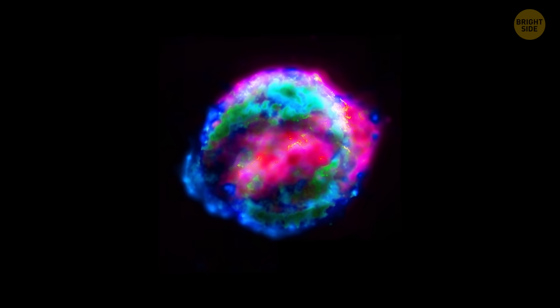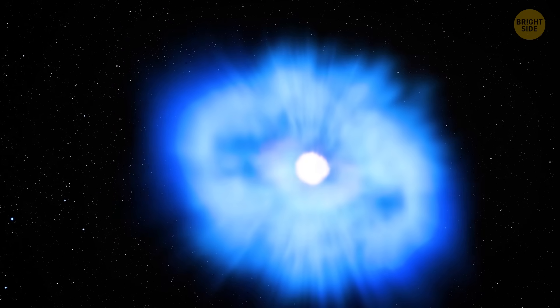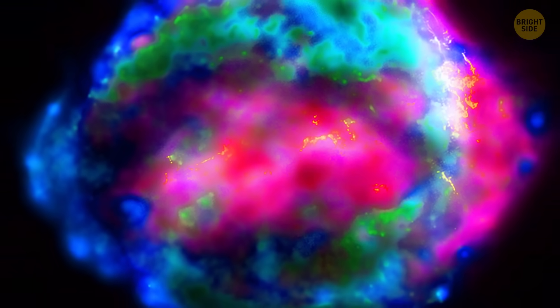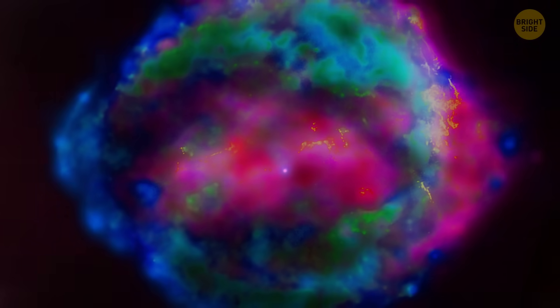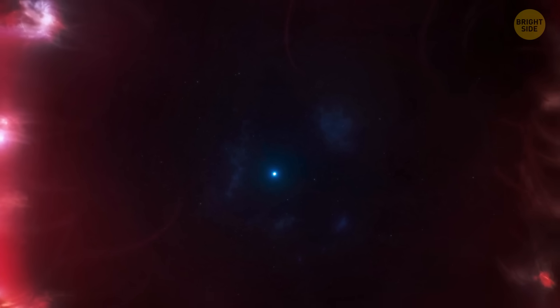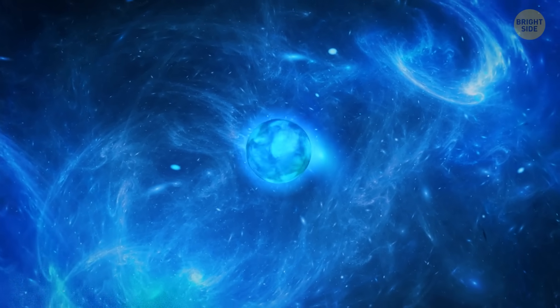In a normal type Ia supernova, the white dwarf star blows itself to bits. But in a type Iax supernova, it doesn't get totally destroyed. It kind of survives, turning into a zombie star. It's damaged, but it's still around. This would actually explain a lot about how Teleos looks and glows.